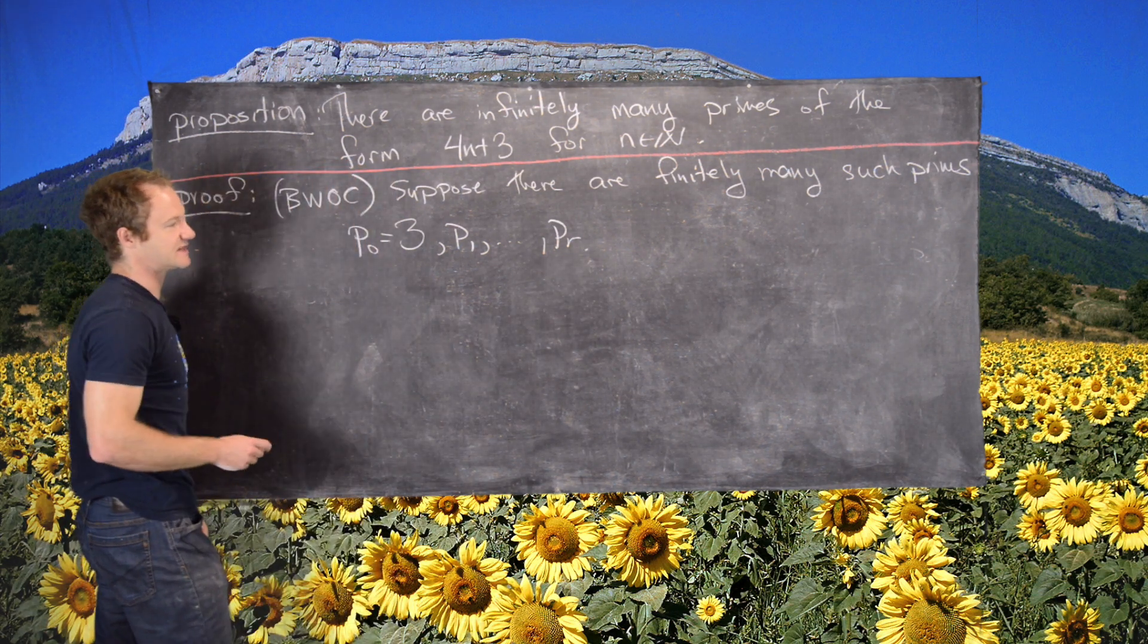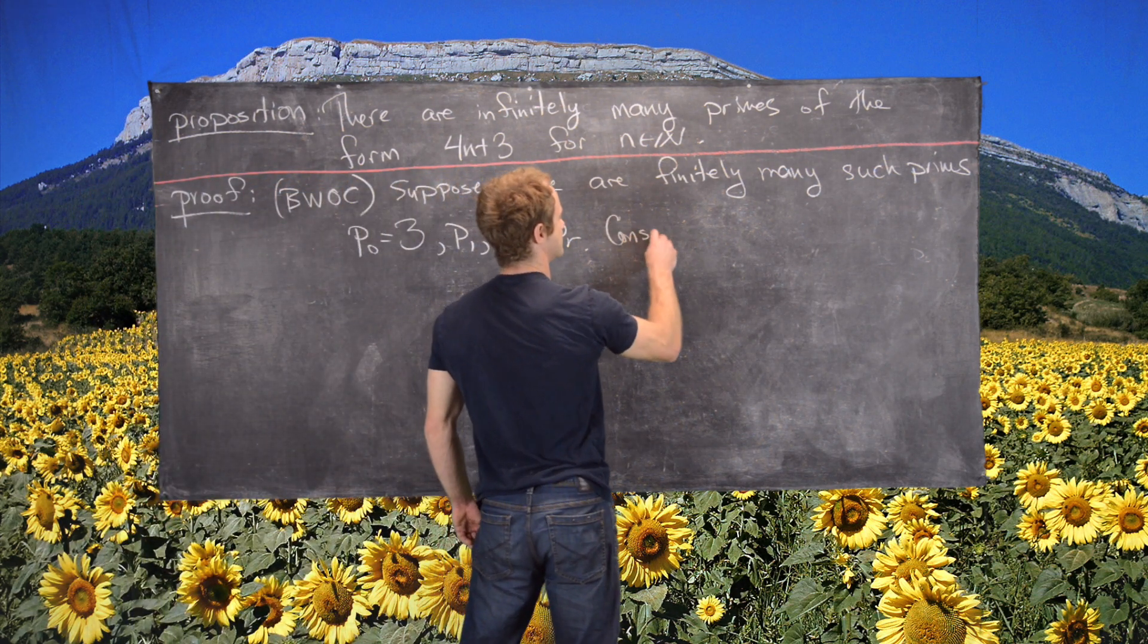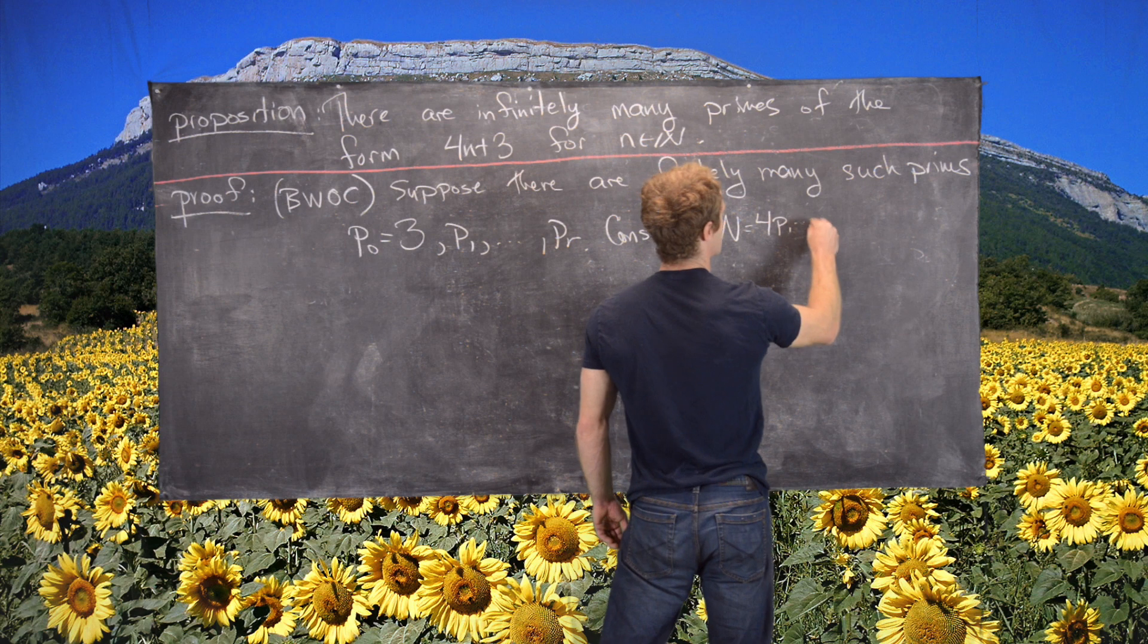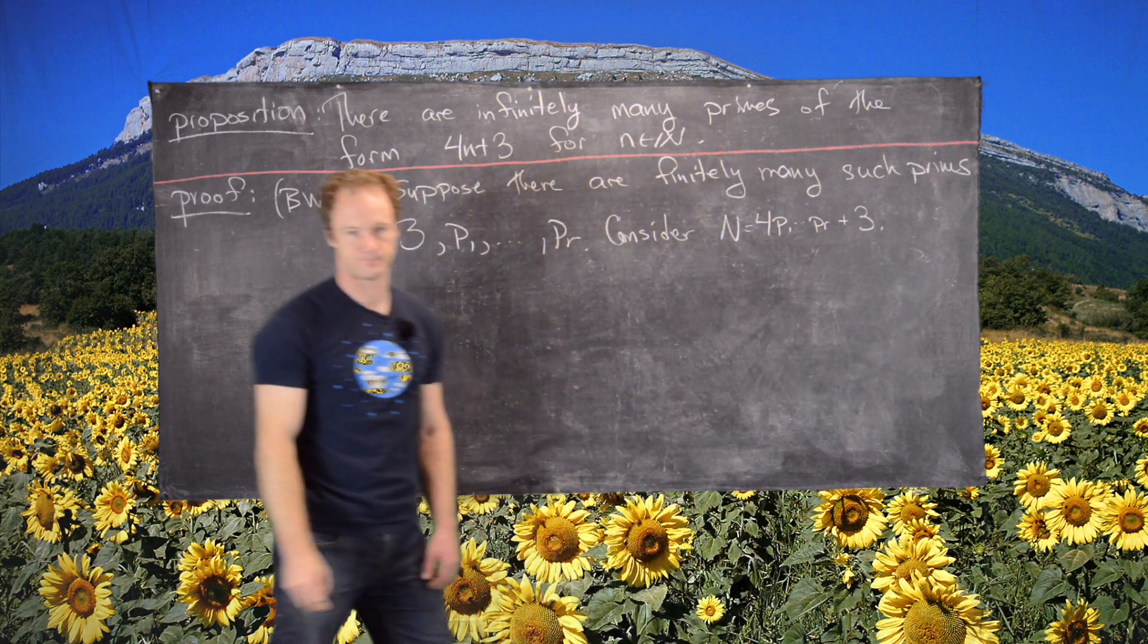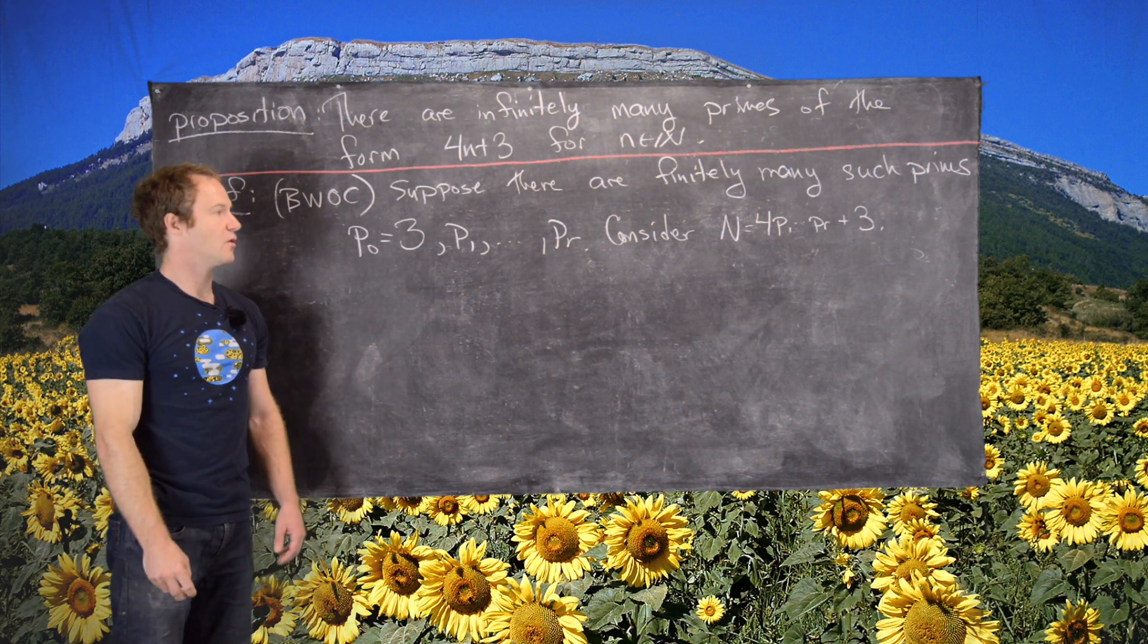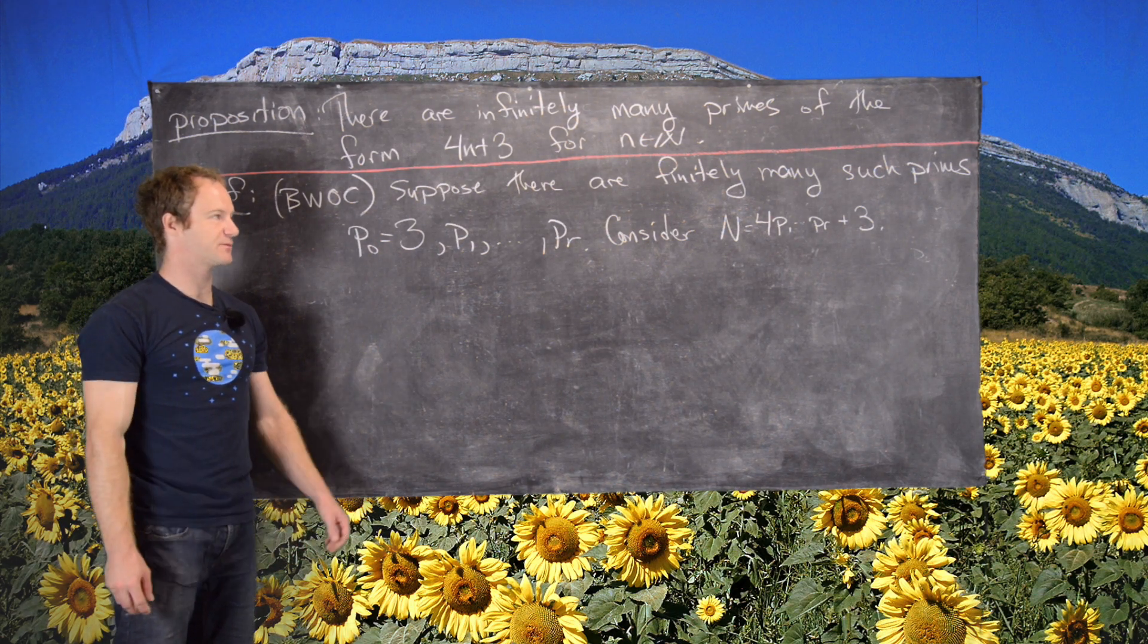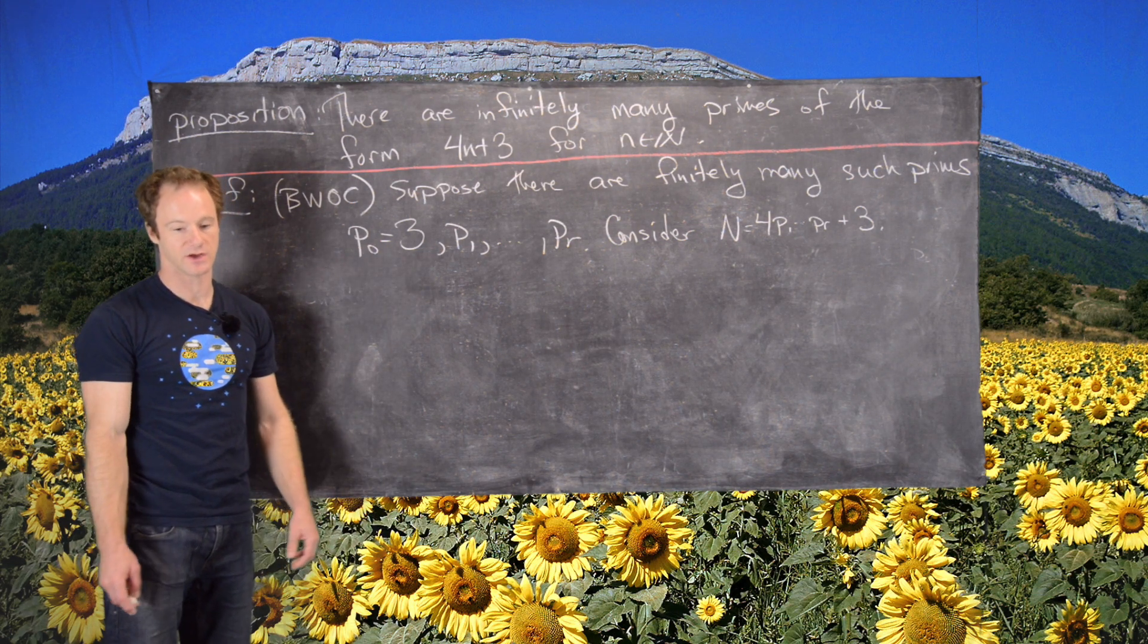Now the next thing we're going to do is consider the following number. Consider n, which is equal to 4 times p1 to pr plus 3. So obviously, this number is of this form. Whether or not it's prime is yet to be determined.